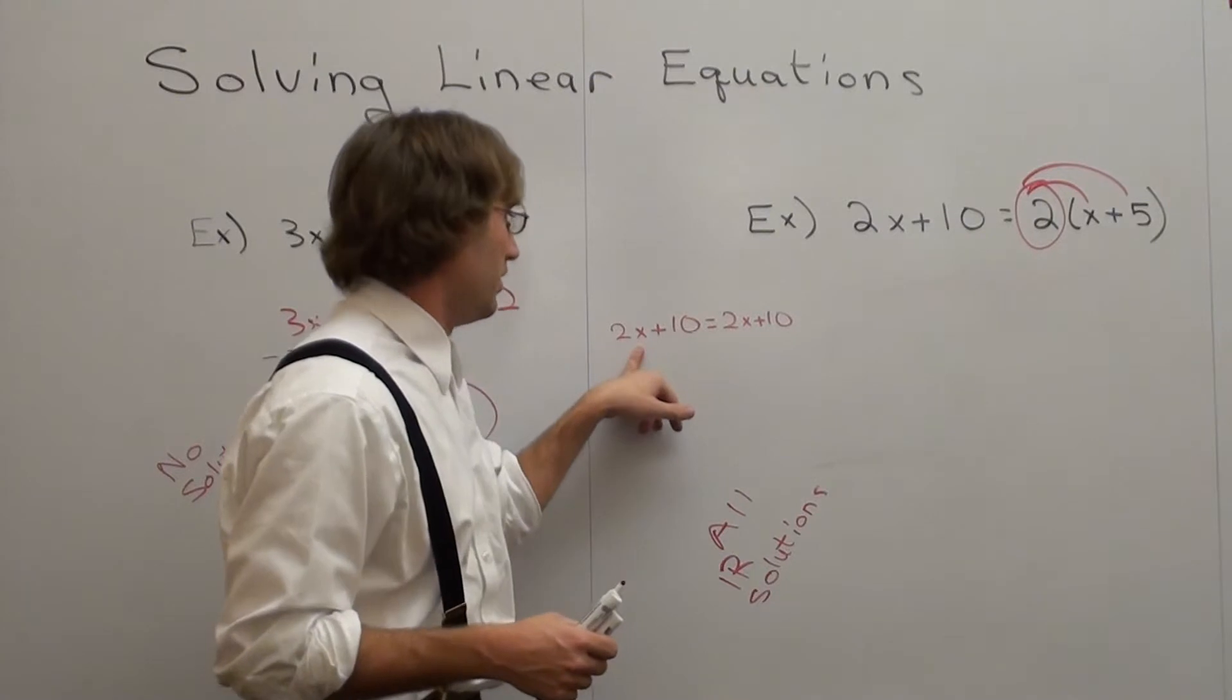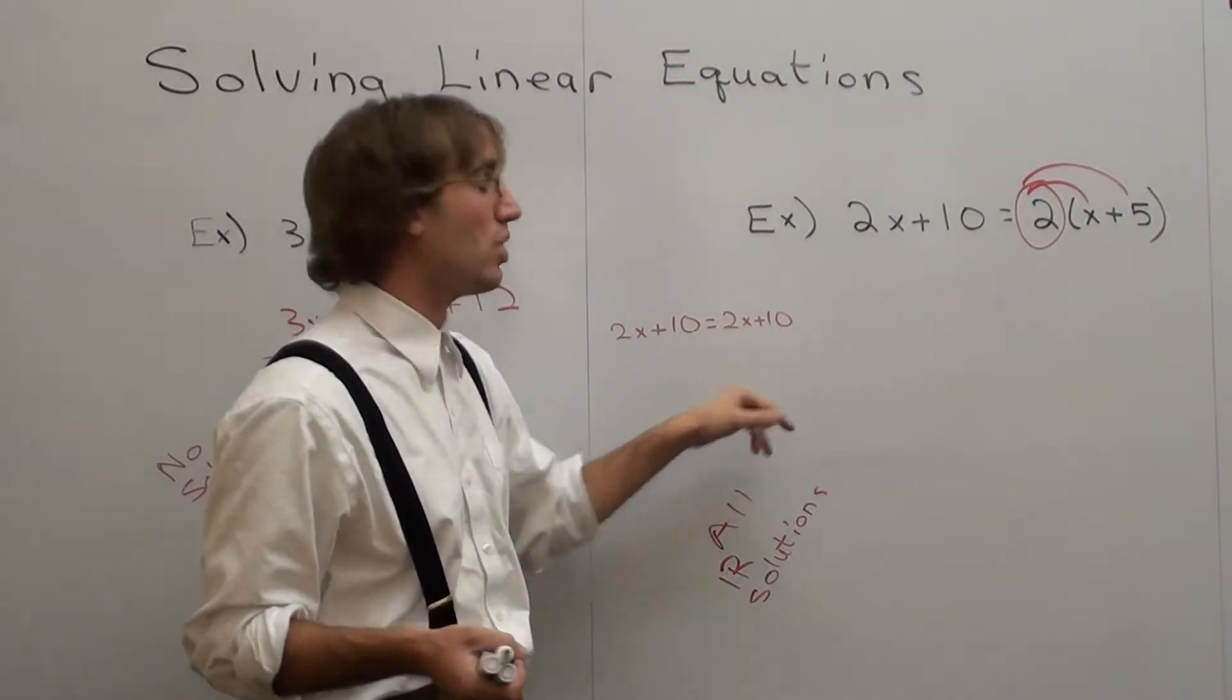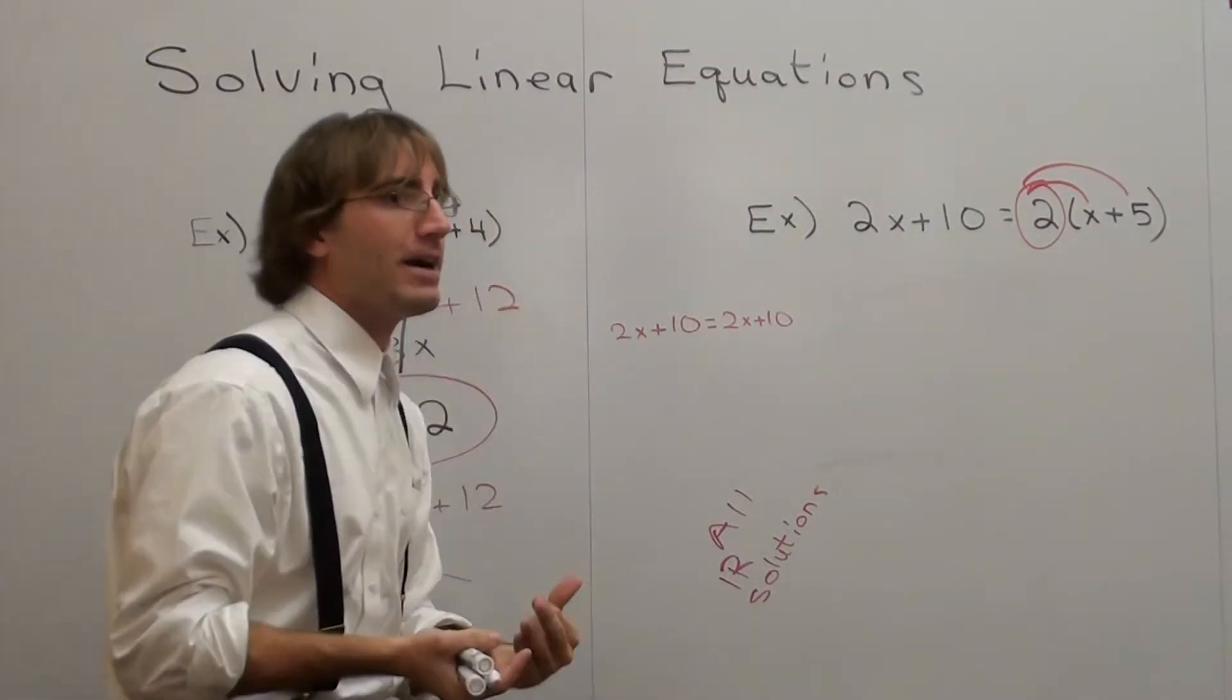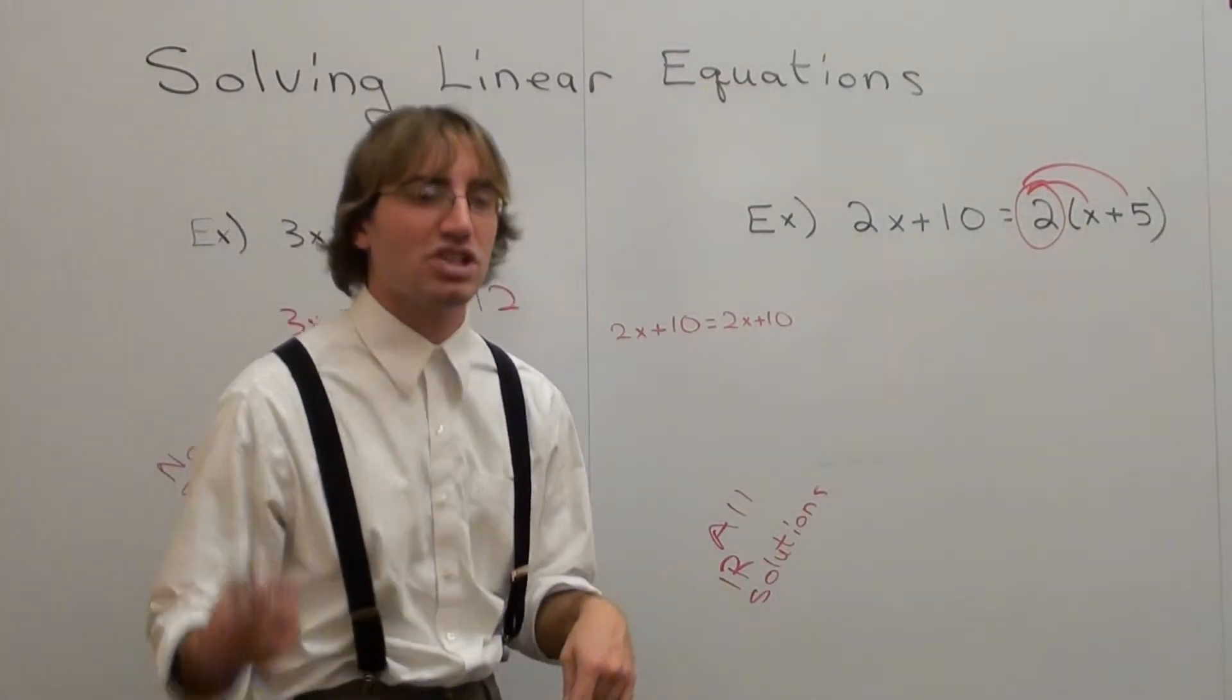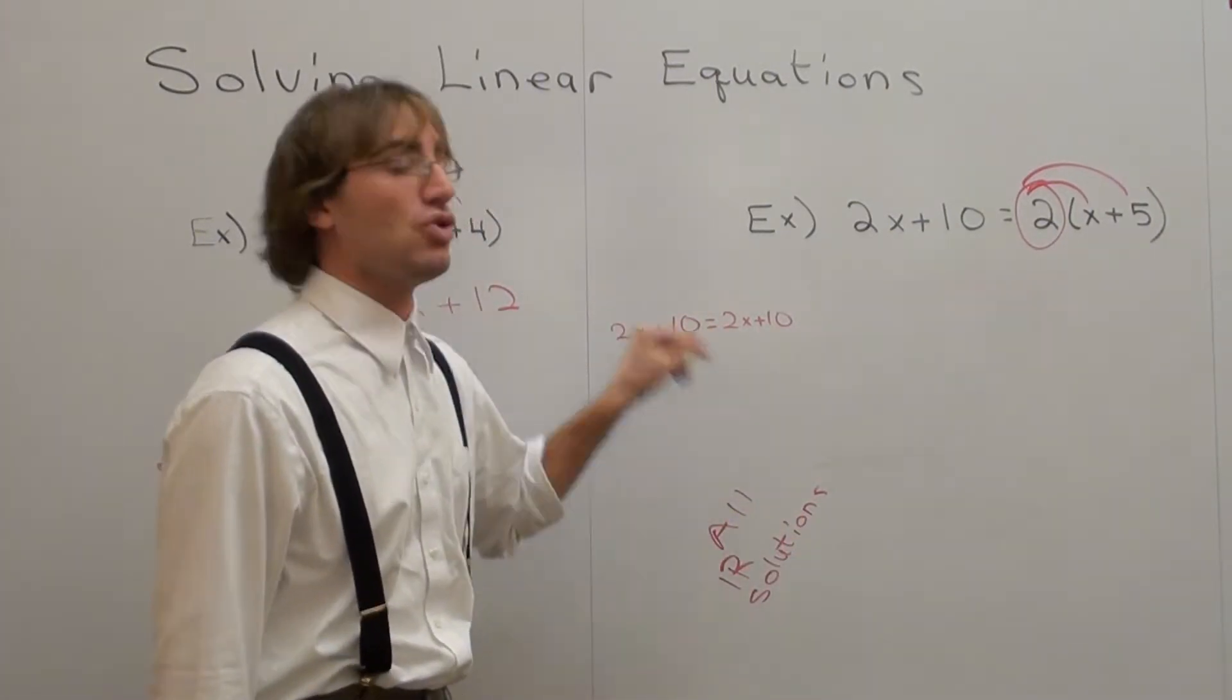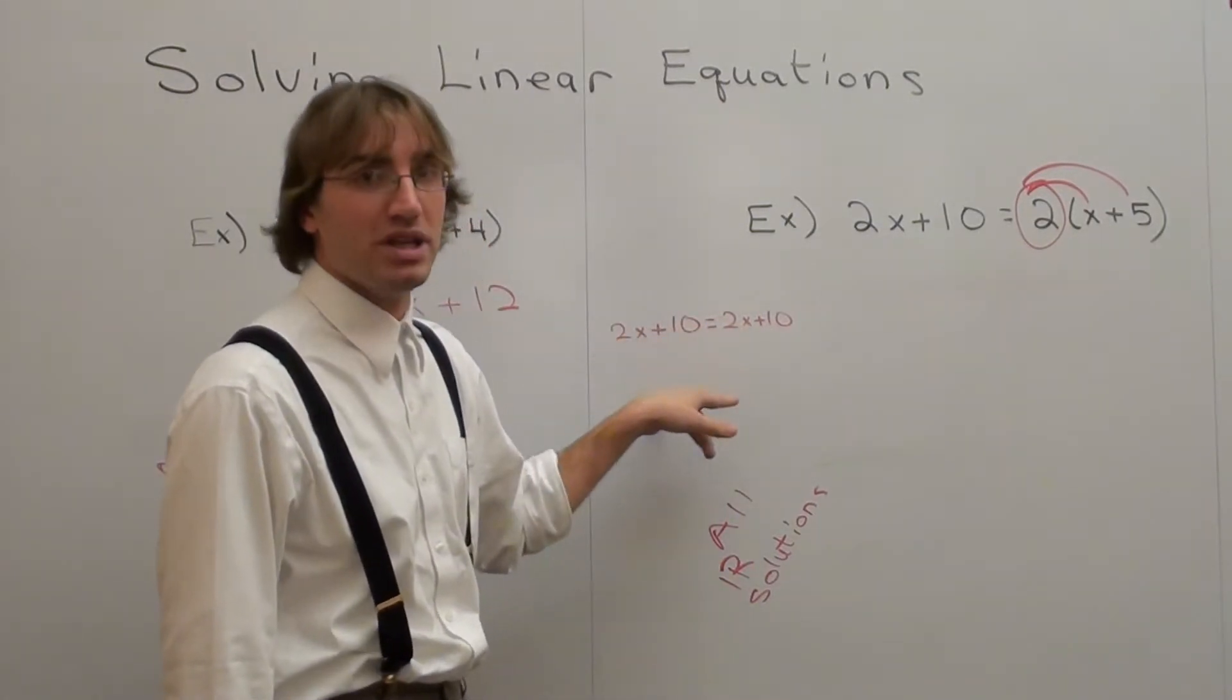If I plug in 1, I'm going to get 1 on this side, 1 on this side. I'm going to get 2 plus 10, which is 12, 2 plus 10, which is 12. No matter what x value I plug in, it's always going to end up being equal. There is no x value that I can think of that won't work. I'm not going to test a huge number, but you can do it, and I promise you, no matter what x value you substitute in, it's going to be equal. The equation's always going to be equal.